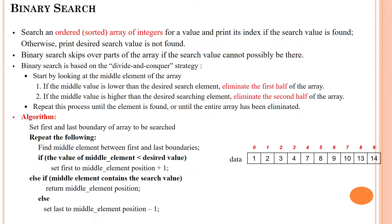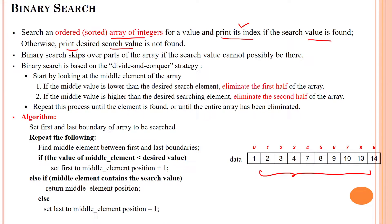Welcome to the binary search session. In binary search, the array should be in sorted order, otherwise we cannot apply binary search. So we are applying binary search on a sorted array of integers. If the searching value is found, we display its index; otherwise, we print that the searching value is not found. Binary search works based upon the divide and conquer strategy.